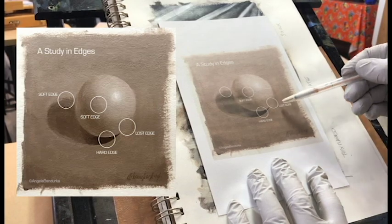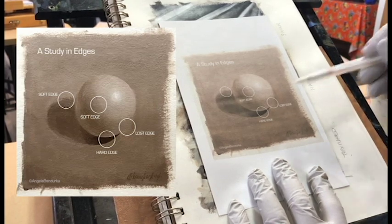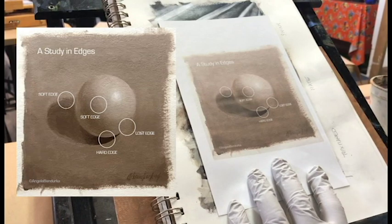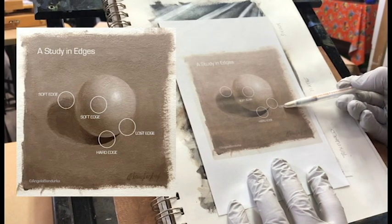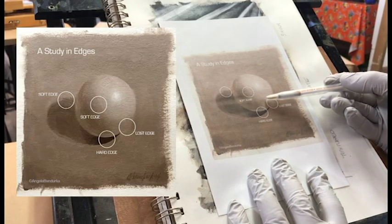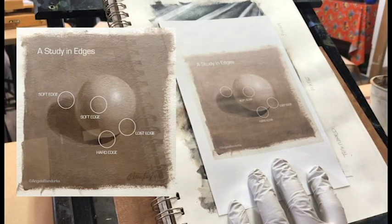Look at this one on the right, the lost edge. Do you see why it's called lost edge? You don't even really see the edge, because the value is the same between the background and the sphere. So that's what we call lost edge.